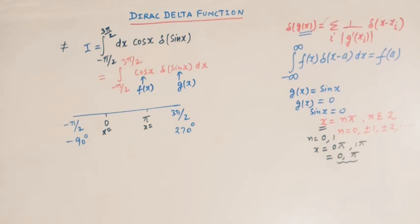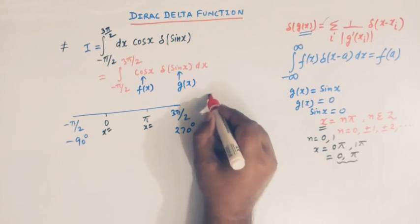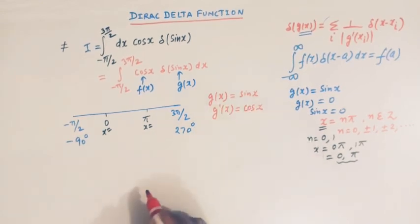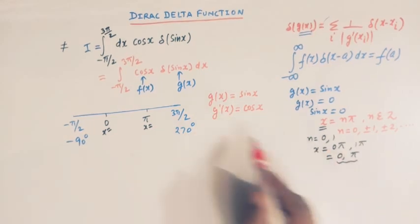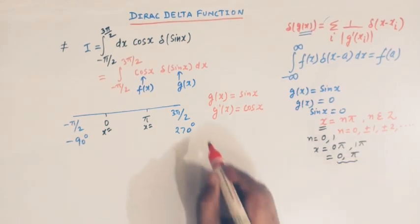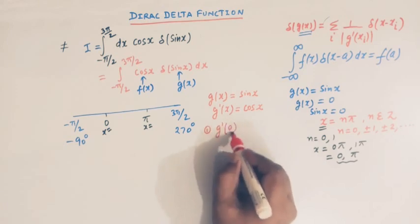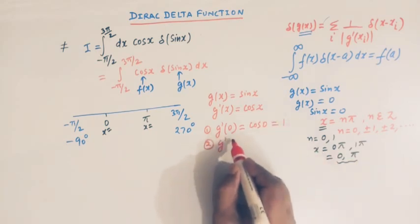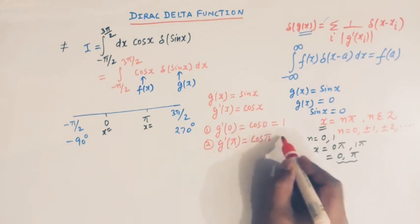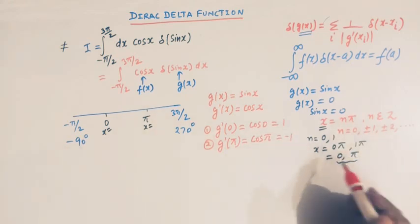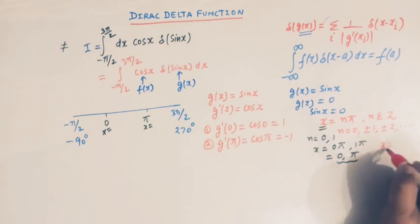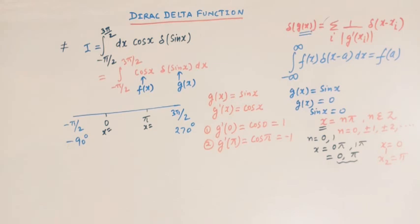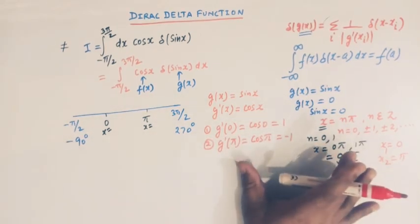Our next step is to find the derivative of g(x). Since g(x) = sin(x), we have g'(x) = cos(x). Evaluating at the two solutions: g'(0) = cos(0) = 1, and g'(π) = cos(π) = -1. We label x₁ = 0 and x₂ = π.